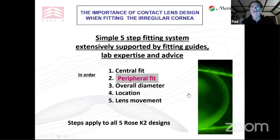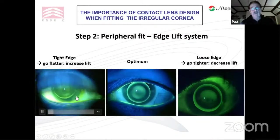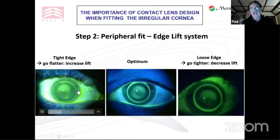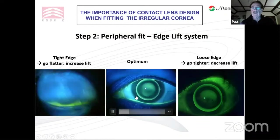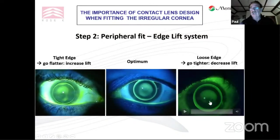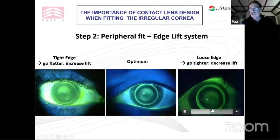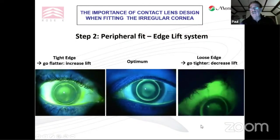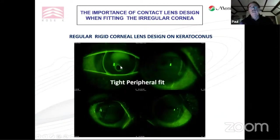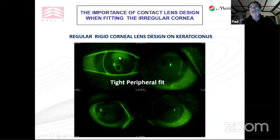This is an ideal-looking edge lift. If it's too tight, you're not going to get tear exchange in the center of the lens. Optimum fitting shows a lovely peripheral band of fluorescence with a blink — those tears will exchange. If it's getting too open, you see the lens lifting off at the edge and small bubbles entering. Here's a regular rigid design fitted on keratoconus showing the damage to the corneal epithelium — the back optic zone is too big, the peripheral system too tight, and the lens is impacting severely onto the corneal epithelium.